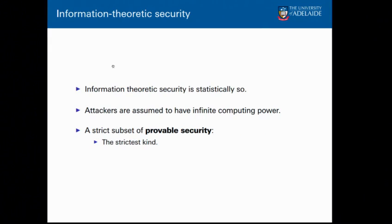Information theoretic security is a type of provable security that uses the statistics of messages and key bits to show what information an attacker could extract. Importantly, an information theoretic proof doesn't depend at all on how much computational power the attacker has. With most cryptography systems, an attacker with enough time and computers could try every key — say all 2^256 possibilities — and find a valid message. But with an information theoretic scheme, that's impossible because the key is equally likely to produce one message as another. This is the strictest kind of provable security.